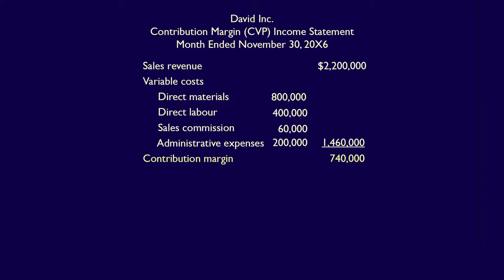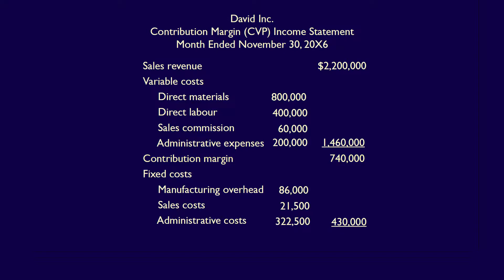What does contribution margin mean? It's the amount of income available to cover the fixed costs and the profit for the owners of the company. That's why it's called the contribution margin — it contributes to the ability of the company to pay their fixed costs and create a profit for shareholders. We can calculate the per unit contribution margin by dividing $740,000 by 2,000 units. Moving forward, under fixed costs: manufacturing overhead $86,000, sales costs $21,500, and administrative costs $322,500 — total fixed costs of $430,000. Operating income is $740,000 minus $430,000, which equals $310,000.